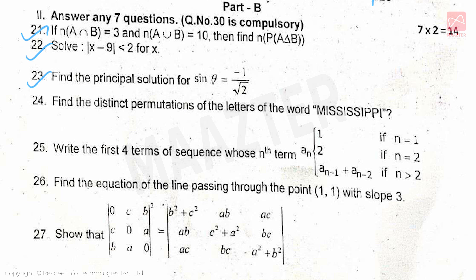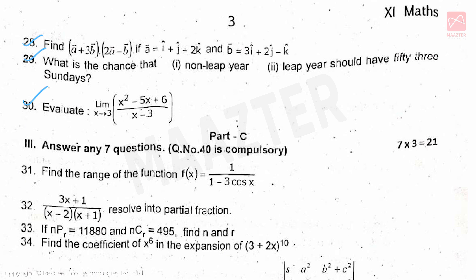Part B. Total is 10 questions, we will attend at least 10 questions, each question carries 2 marks, total 14 marks. Question number 30 is compulsory: evaluate limit x→3 of (x² - 5x + 6)/(x - 3). So first, x² - 5x + 6, find factors and then simplify, then finally apply the limit, and then answer is 1.